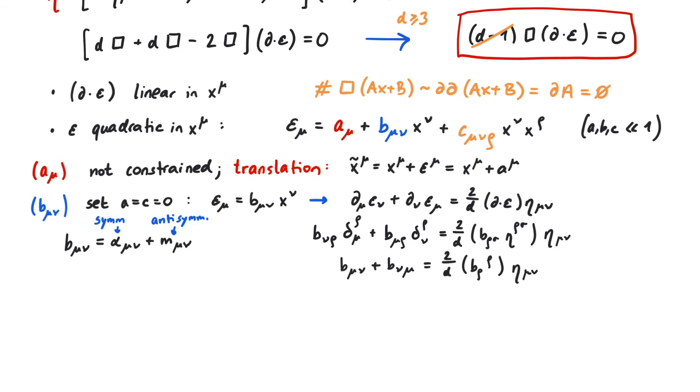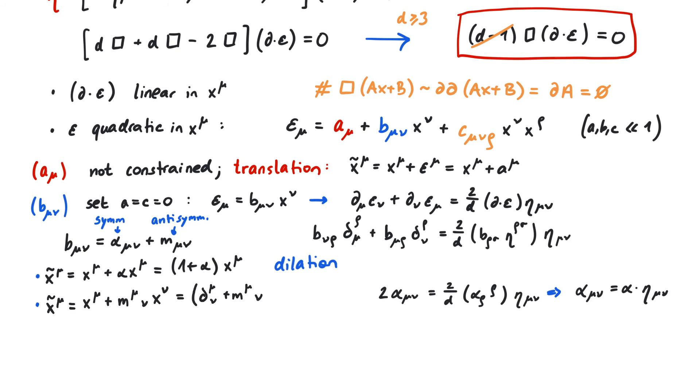Let us only consider the symmetric part. We get 2 alpha_mu_nu is equal to 2 over d times the trace of alpha times the metric. This tells us that alpha is in fact proportional to the Minkowski metric, and we can write it as a number alpha times eta. Now if we only consider the symmetric term, then x plus epsilon is a dilation transformation. x gets multiplied with a factor 1 plus alpha. And the antisymmetric part corresponds to the usual Lorentz transformations.